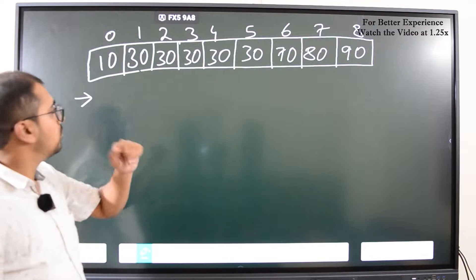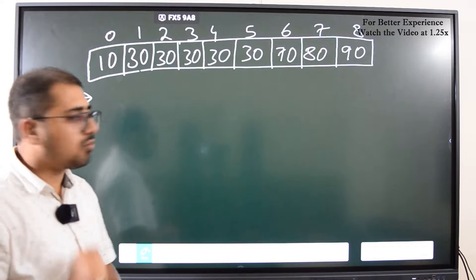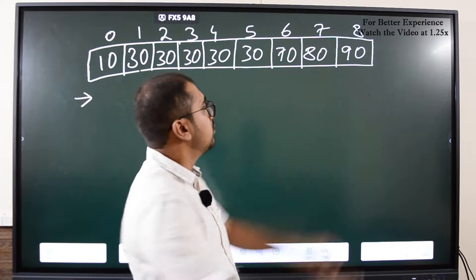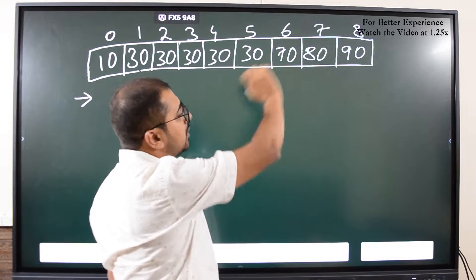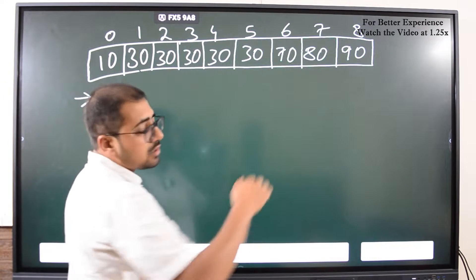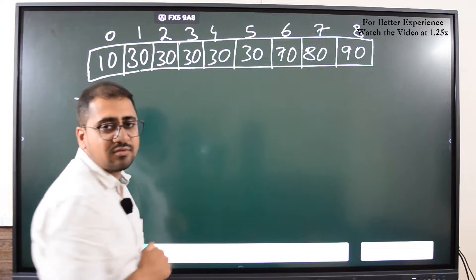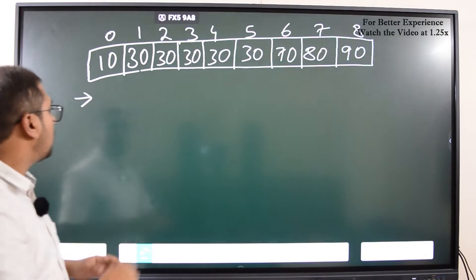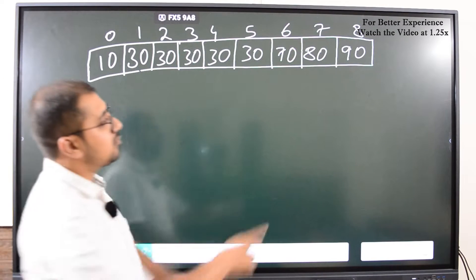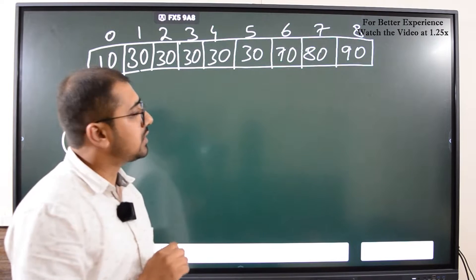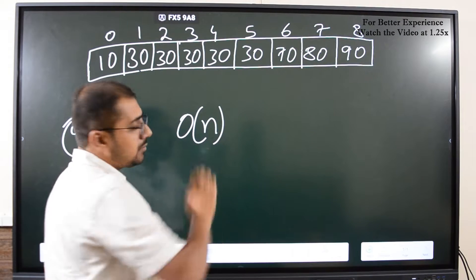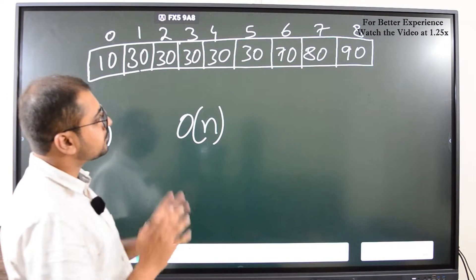With linear search: the first element is 10 — not 30. The second element at index 1 is 30, so first occurrence is 1. For last occurrence, I start from the right — index 7 is not 30, index 6 is not 30, index 5 is 30, so last occurrence is 5. What if the target is 90? In the worst case I'd scan the entire array — that's O(n) time complexity.